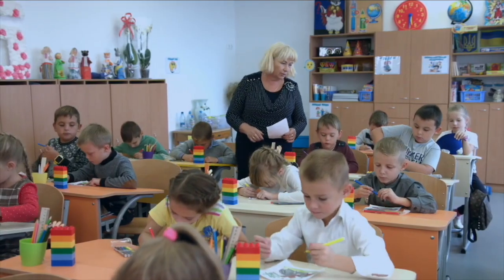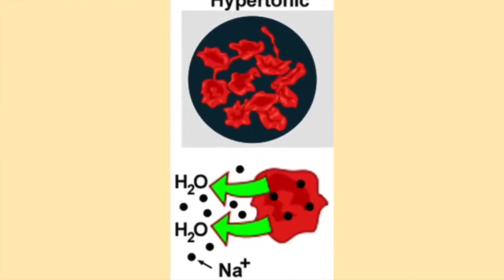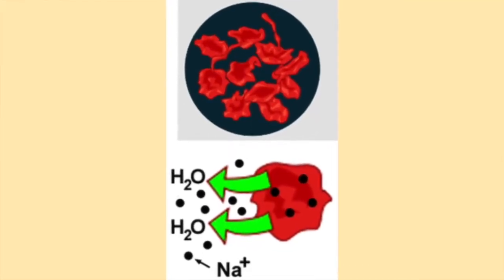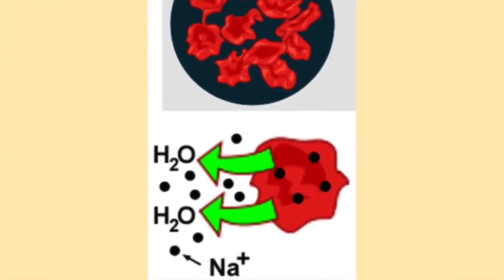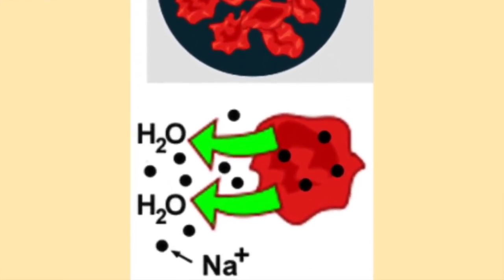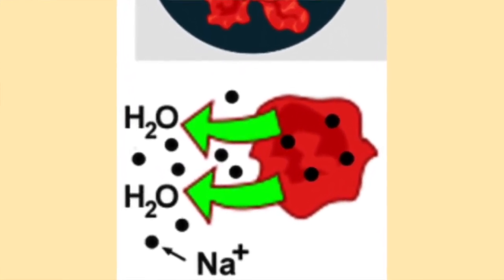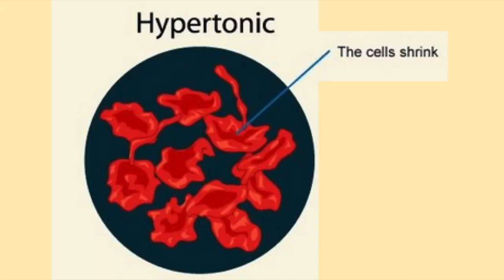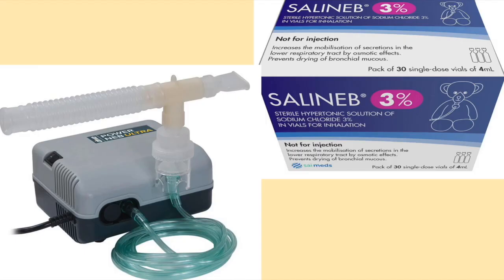Remembering back to science class, when a cell is exposed to a hypertonic solution, the water inside the cell will leave in an attempt to balance out the high solute concentration of the solution. The cell loses water and shrinks, and thus the hypertonic solution gains water.